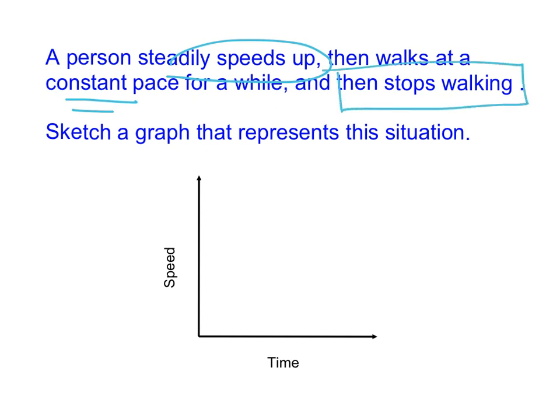The stops walking part gets kind of interesting. But first, if we draw this out, a person steadily speeds up. So they're going to speed up. I have an increase. They walk at a constant pace. So this is just as time goes on. We're not going faster or slower. And then they stop walking. It's really tempting to have them stop walking like this, but what's happening here is a decrease in speed as time passes. If you need just an immediate, abrupt stop walking, then they're going to be walking along and then just stop. And it will go straight down.